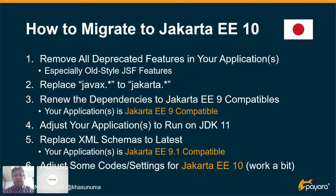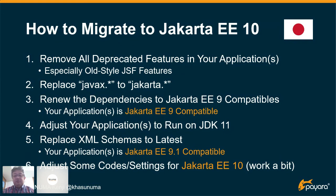ステップ2として、パッケージ名のjavaxをJakartaに全部変更してください。変更はIDEでもできますし、Eclipse Transformerというツールがあって、それを使うと一発で全て変換してくれますので便利です。ステップ3として、皆さんのアプリはJava EE / Jakarta EEの標準APIだけでなく、何らかの依存ライブラリを使っていると思います。そういった依存ライブラリをJakarta EE9互換のものに全部置き換えて新しくしてください。ひょっとしたらこの時点でソースの修正が必要になるかもしれませんので対応してください。